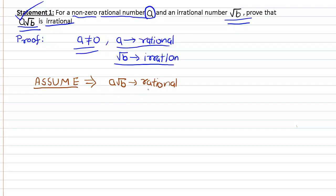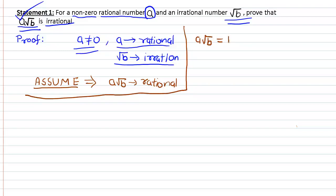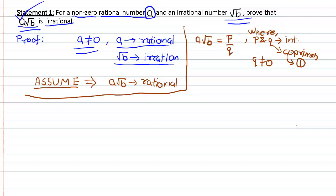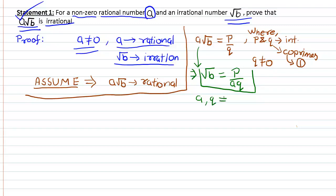As a × √b is assumed to be a rational number, it can be written in its simplest form as p/q, where p and q are integers, p and q are co-primes (meaning 1 is the only common factor between p and q), and q is not equal to 0. Since a × √b = p/q, this gives us √b = p/(aq).